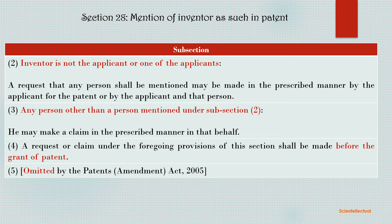Subsection 2 under Section 28: When the inventor is not the applicant or one of the applicants, a request that any person shall be mentioned may be made in the prescribed manner — that is, Form 8 — by the applicant for the patent or by the applicant and that person jointly. In Subsection 1, we saw the case where the inventor is the applicant, and he claims or requests through Form 8 to mention his name in the patent application. Now, in the case of Subsection 2, where the inventor is not the applicant — they are different persons — the claim or request through Form 8 is to be done by the applicant or the applicant and that person jointly.